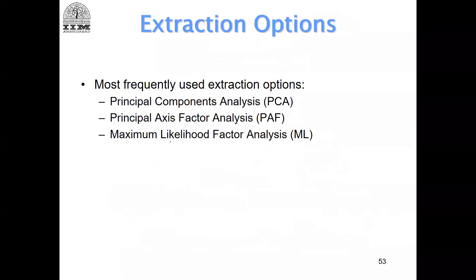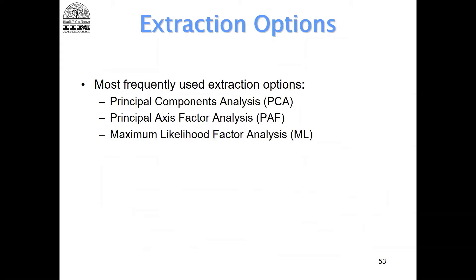So what are the extraction options? The first decision was about sample size and factor loadings. The second decision is about extraction options. Now, the most common in factor analysis that we study is what we call principal component analysis, PCA. This is the most common thing done when doing factor analysis, but PCA is actually not a factor analysis method.